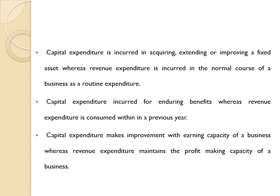Capital expenditure is incurred in acquiring, extending, or improving a fixed asset. Capital expenditure is incurred for acquisition of assets like land, machinery, and furniture. Capital expenditure is also incurred for extending or improving a fixed asset — for example, building extension is capital expenditure. On the other hand, revenue expenditure is incurred in the normal course of business as a routine expenditure, to meet day-to-day expenses of the business.